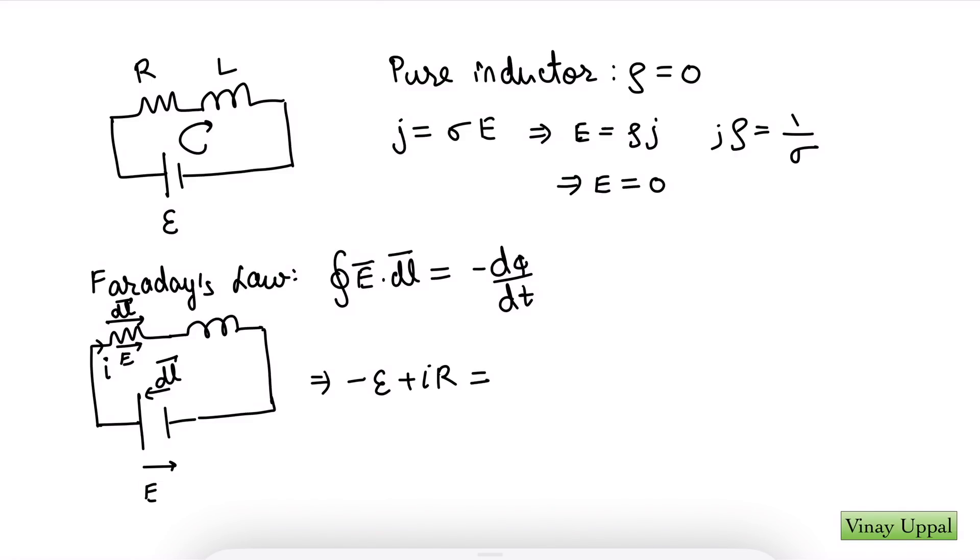And on my right hand side, minus dφ by dt. I know inside the inductor flux is going to be Li. And therefore, dφ by dt is going to be L di by dt. I'll have minus L di by dt on the right hand side. And this is my circuit equation. So this is absolutely correct. And this is what Professor Walter Lewin also says. I absolutely agree with him at that point that Faraday's law is the correct way to do this.